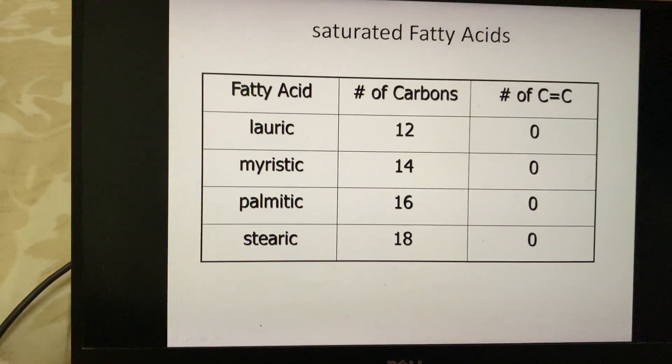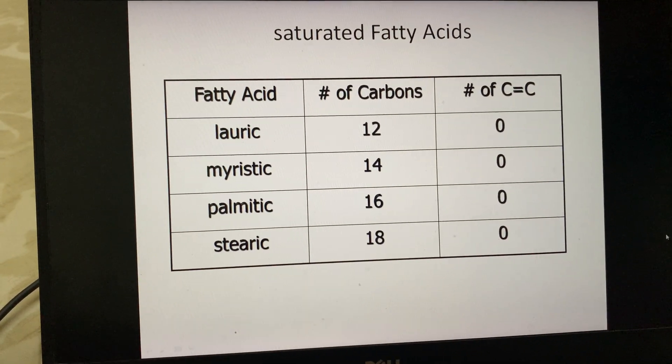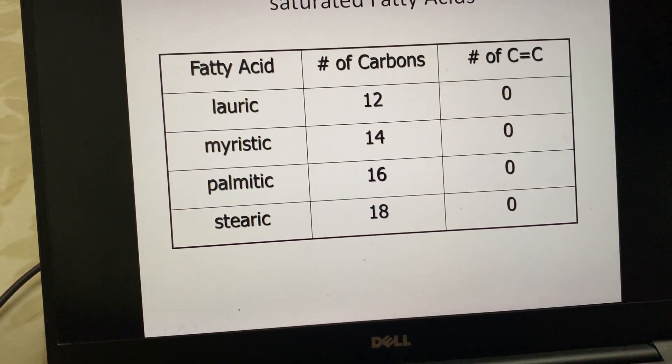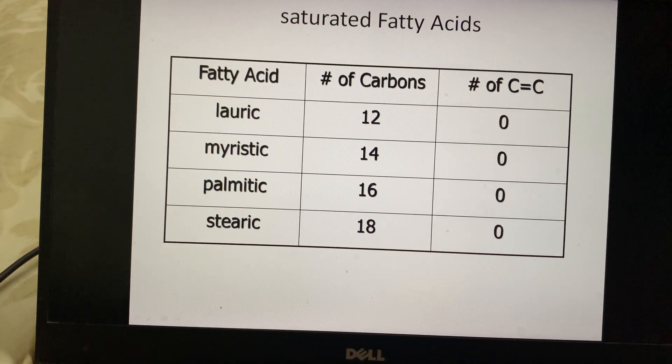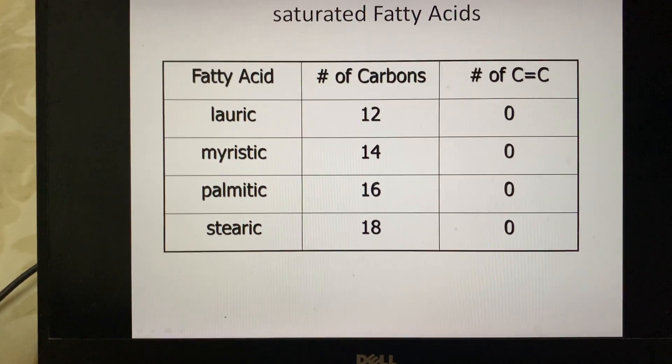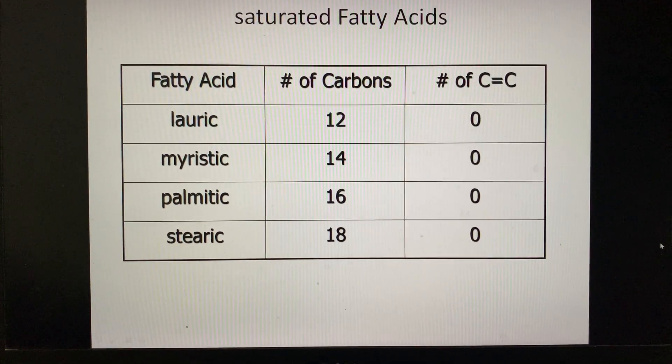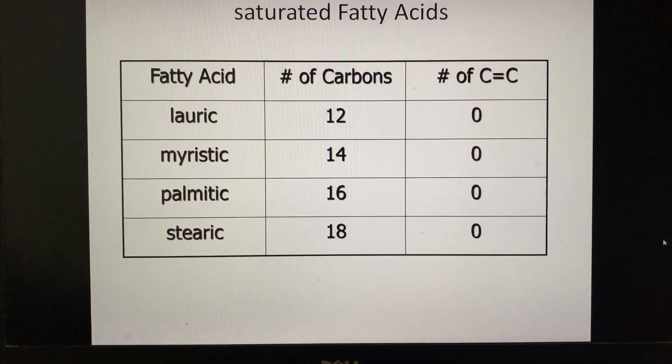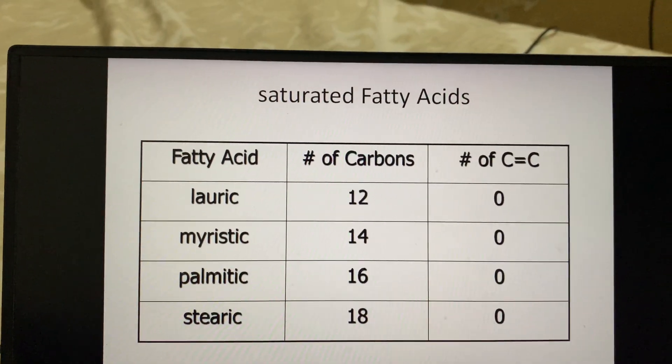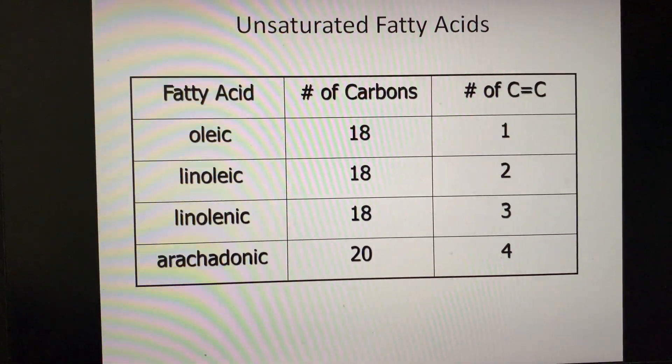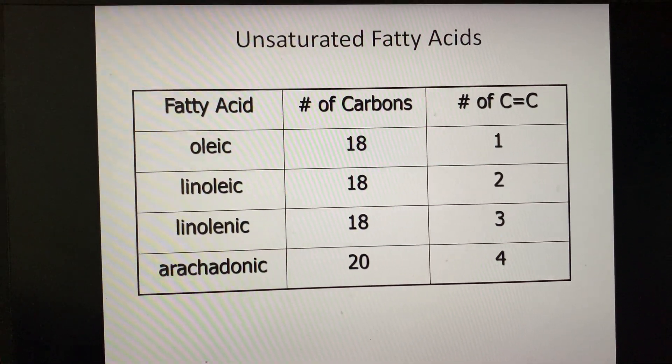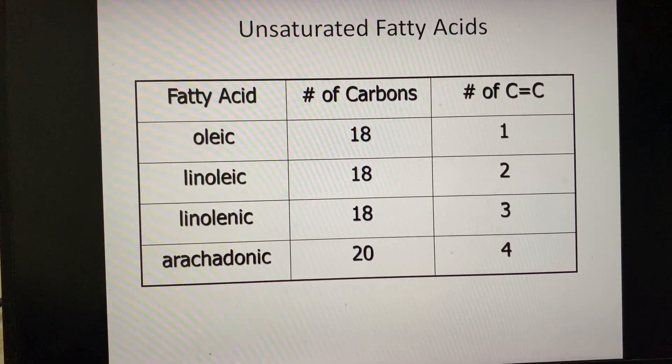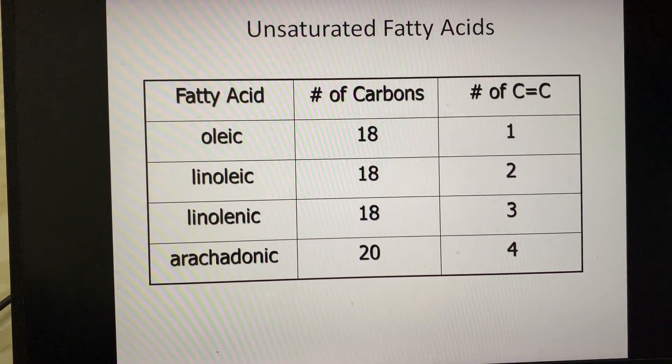Saturated fatty acids individually listed: lauric acid, myristic acid, palmitic acid, stearic acid, along with their number of carbon atoms. They don't have any conjugation in them. For unsaturated fatty acids, as in the earlier table, you can memorize the names, number of carbons, and how many double bonds are there.